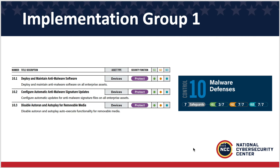Looking at implementation group 1: having anti-malware software and updating that software for new anti-malware signatures. Safeguard 10.3 addresses auto-execute — for example, plugging in a USB and it automatically executes whatever was just plugged in. You want to disable that so you have a second chance against a program auto-running or auto-playing for any removable media.